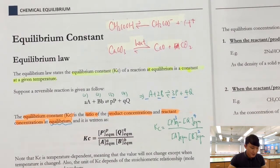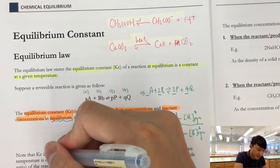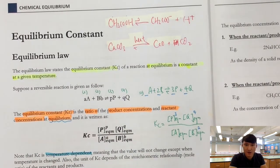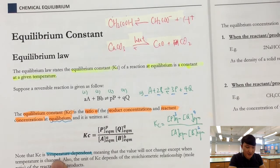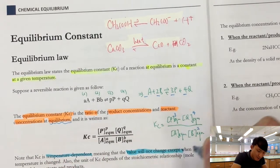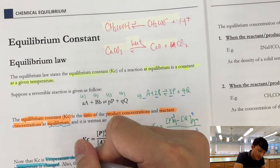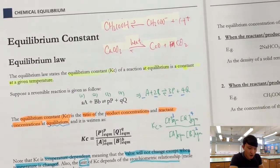Kc is temperature dependent. It is a constant value for each chemical reaction provided that temperature is the same. If the temperature changes, then the value of Kc will also change. Pay attention also to the unit of Kc — it depends on the stoichiometry of the reactants and products.